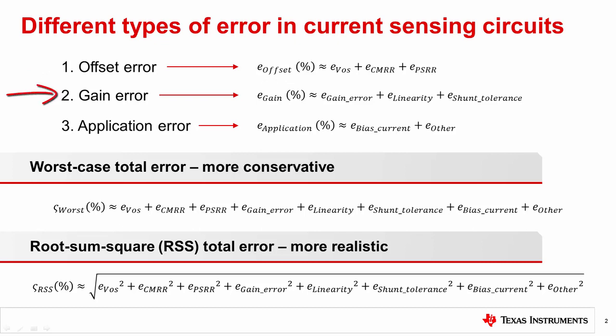The second error type is gain error. The gain error and linearity of the amplifier coupled with the tolerance of the shunt resistor all create errors that vary with input signal level. In general, gain error is the dominant error type at high input levels.